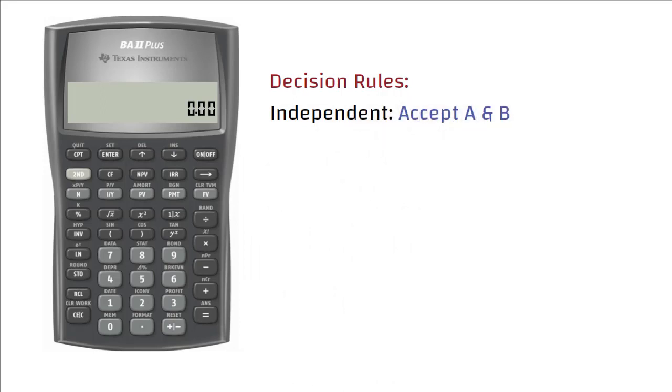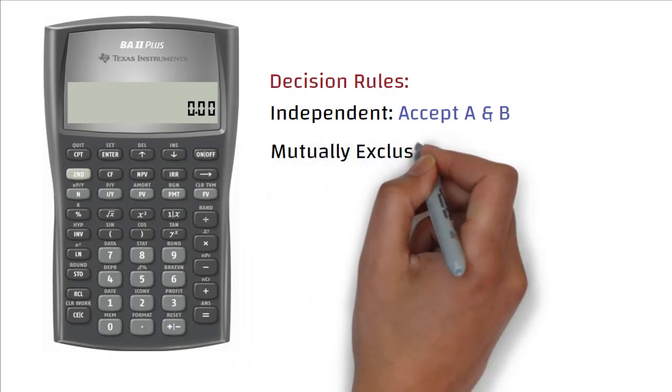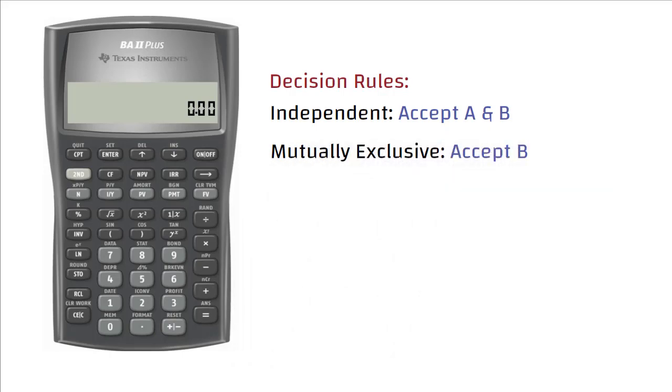If projects A and B are mutually exclusive, select the project that has higher positive NPV. Since the NPV of project B is greater than project A, project B should be accepted.